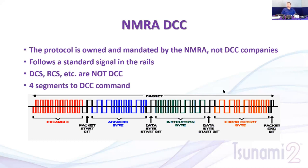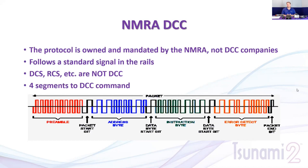The DCC command is four segments long. First is the preamble — it tells the decoders that a command is about to come, essentially 'hey everybody, listen up.' All decoders start listening. The next part is the address, which tells the decoder which address is being communicated to. Decoders not set to that address go back to sleep, while the intended address continues listening.